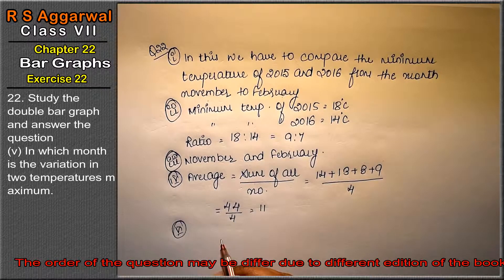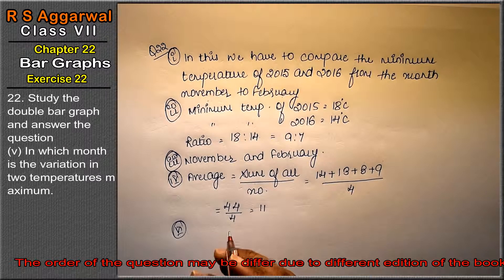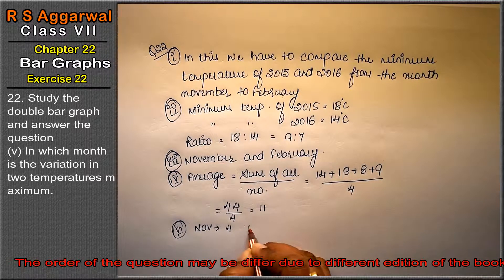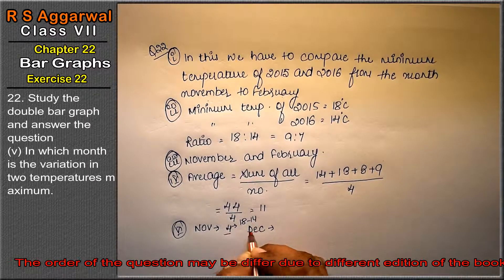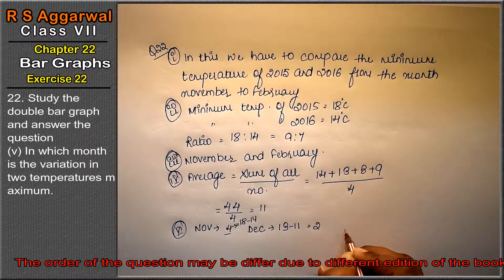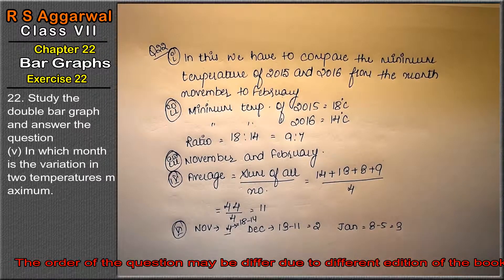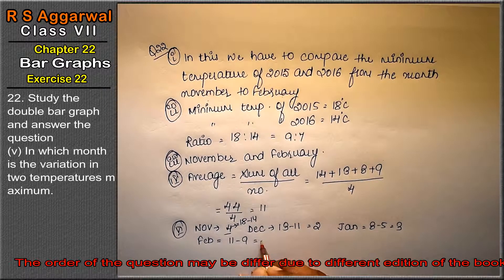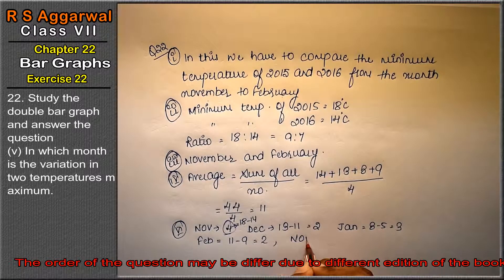Fifth part: in which month is the variation in the two temperatures maximum? In November, the variation is 4 — calculated as 18 minus 14. In December, 13 minus 11 gives a variation of 2. In January, 8 minus 5 gives a variation of 3. In February, 11 minus 9 gives a variation of 2. So the maximum variation is in November — November is the answer.